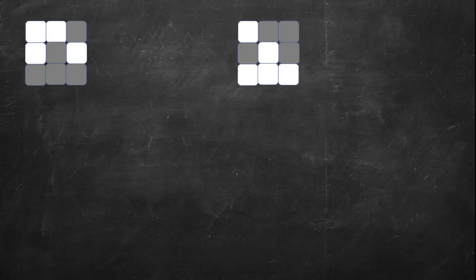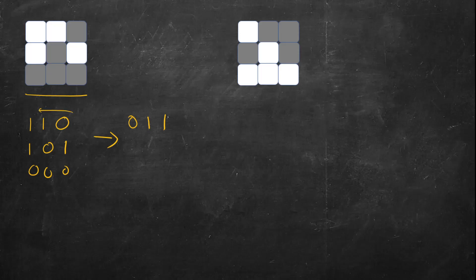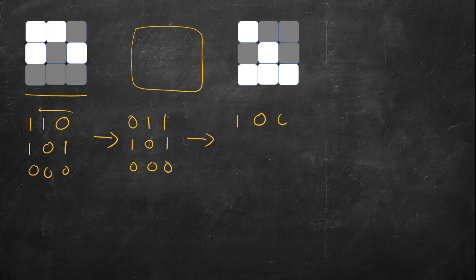Here we have 1 1 0 as the first row, 1 0 1 as the second, and 0 0 0 as the third — this is the input. Next, take the first row and reverse it, so it becomes 0 1 1. The second row remains 0 1 0 and the third stays 0 0 0. This is the intermediate step. Then we flip all the bits, so it becomes 1 0 0, 1 0 1, and 1 1 1, which is our final result.